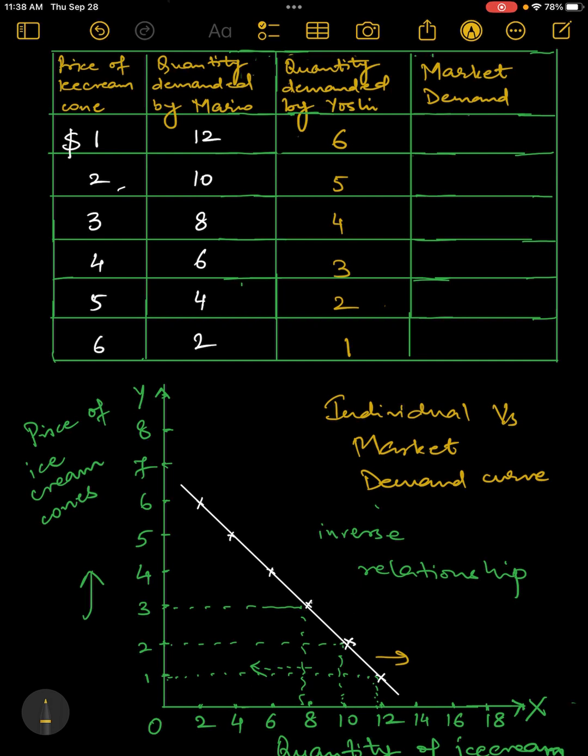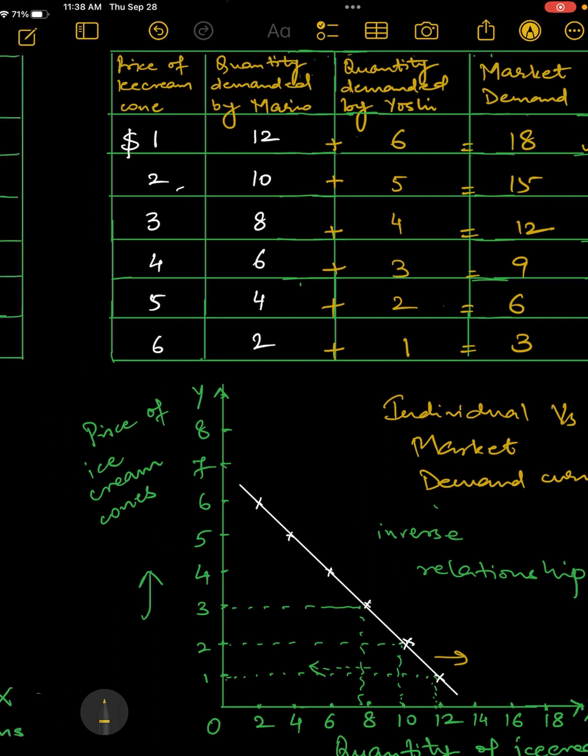Now to find out market demand, I need to add these two. So 12 plus 6 is 18, 10 plus 5 is 15, 8 plus 4 is 12, 6 plus 3 is 9, 4 plus 2 is 6, 2 plus 1 is 3. So this column shows me the market demand. So market demand is basically sum of all the individual demands for a particular good or service at a given price.